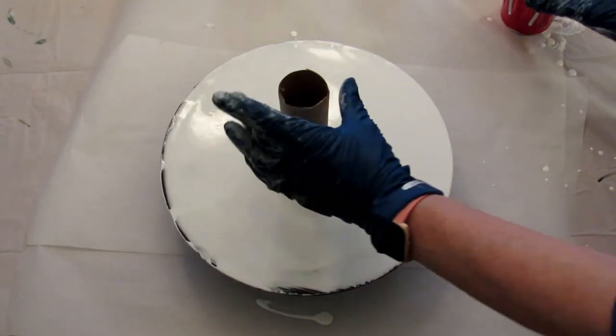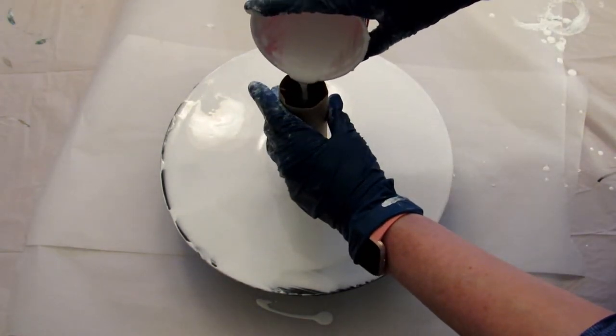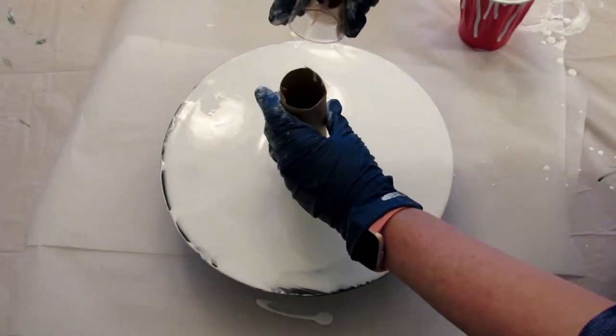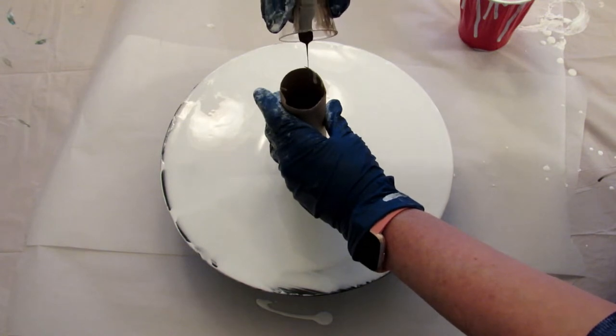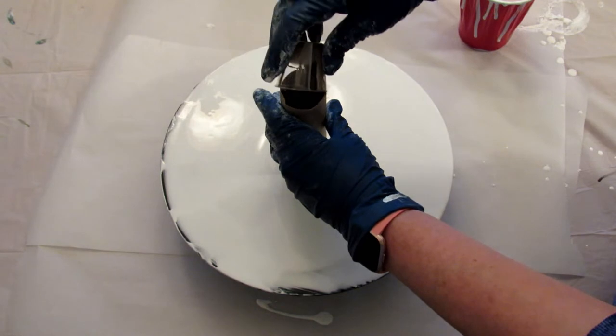All right, so I'm gonna get started with the white. And I'm gonna use these tiny little cups up. These have a tiny bit of silicone in them. They're from the last pour I did. The rest of the paints do not have silicone.